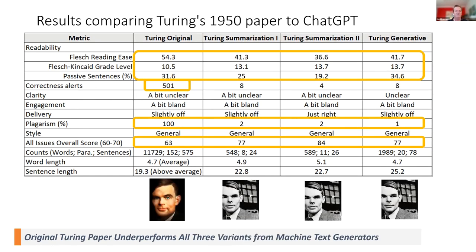This is the output we produced. Turing's original paper scored 14% lower in overall English written metrics than all of the machine versions. Grammarly Pro has essentially shifted the Turing test to grading AI with another AI. When you add all these features up, higher score is better: 63 versus 77 for Turing summarization one. The second summarization goes all the way up to 84. When we pose questions to it, you can get to 77. At a core level, the machine can out-write the human based on these inputs.